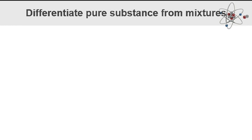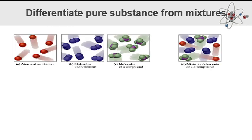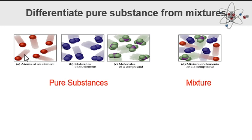To start, I have here 4 pictures. The first 3 are pure substances, and then the second one is the mixture. So you can see, here in pure substance, pure substance can be composed of either the same atoms or elements. This one is a molecule and then this is a compound. So we can say that pure substance can be an element, a molecule of the same element, or a molecule of a compound. When we say mixture, it is a combination of either elements or compounds.